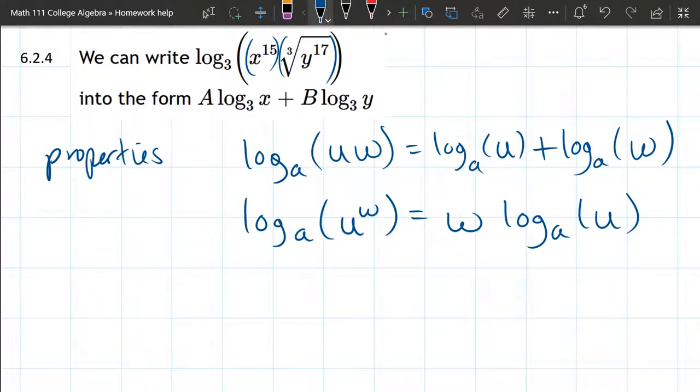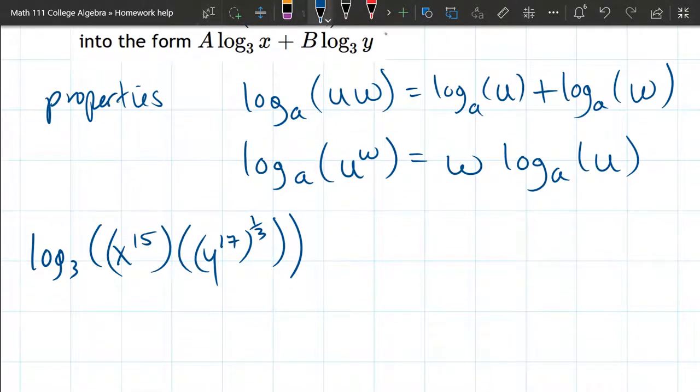So I'm going to rewrite our original question, which says log base 3 of X to the 15th. And I'm using these extra parentheses here. All right, we have a third power on the Y. It's a third root, but that means a third power. So I'll write it as one-third like this. Okay, so first up, we have to look at what is the algebra form here. What's happening?